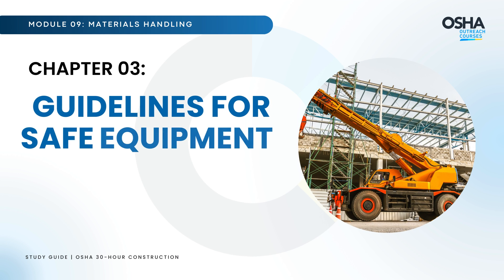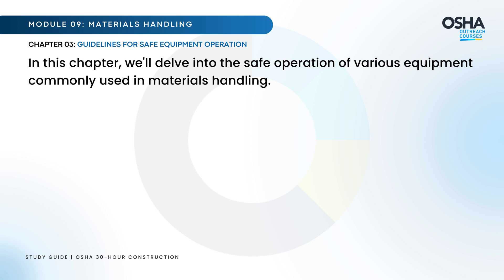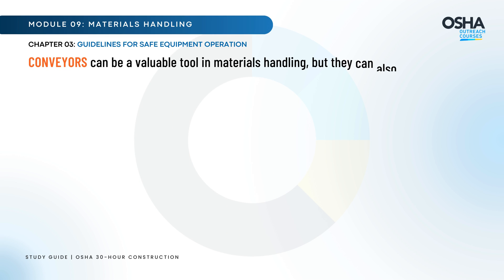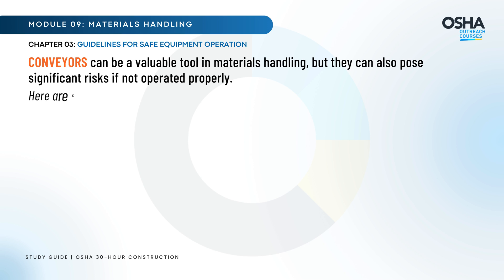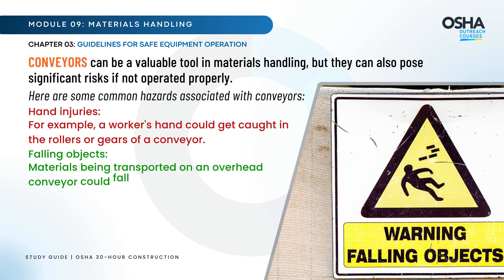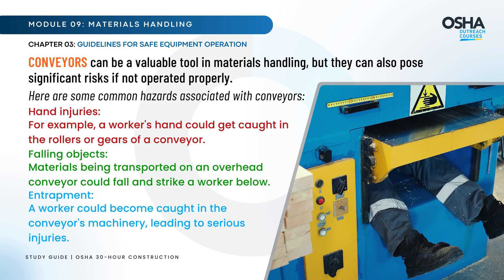Chapter 3 covers guidelines for safe equipment operation. Let's start with conveyors. Conveyors can be a valuable tool in materials handling but can pose significant risks if not operated properly. Common hazards include hand injuries — such as a worker's hand getting caught in rollers or gears — falling objects from overhead conveyors, and entrapment, where a worker could become caught in the conveyor's machinery leading to serious injuries.